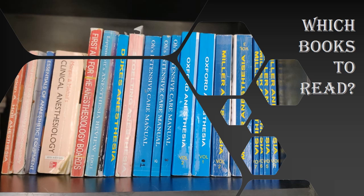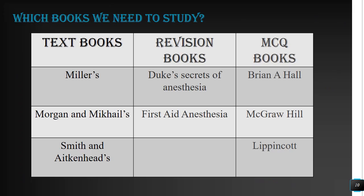We have categorized books into three different groups. The first category is textbooks, the second is revision books, and the third is MCQ books. In the textbook category we have three main books: top of the list is Miller's Anesthesia, the second is Morgan and Mikael's Anesthesia, and the third is Smith and Atkinhad's.